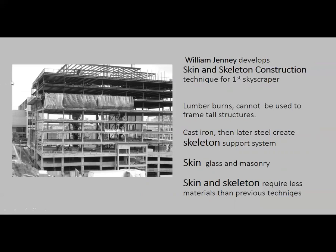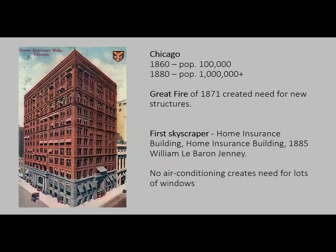In skin and skeleton construction, they make a cast iron and now steel frame — that's the skeleton — and then once the skeleton is completed they put the skin on it, which is masonry like bricks or stone, and glass. The great thing about it is it requires less material than previous techniques, since you no longer need to build thick stone walls. The frame is constructed first, and then the glass and masonry skin goes on the outside.